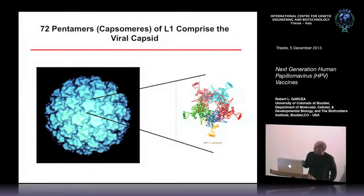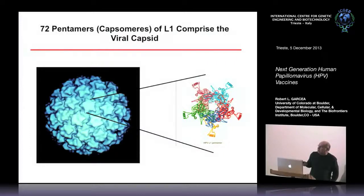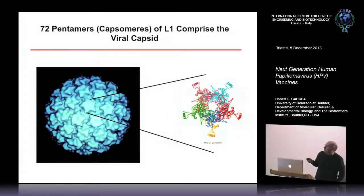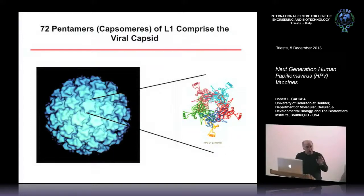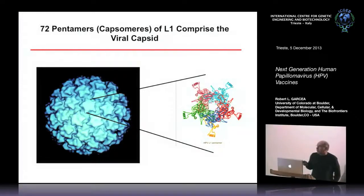Here's where structural biology comes in. This is a cryo-electron micrograph done at the NIH of a bovine papillomavirus virion. You can see the protein subunits on the viral surface — these pentamers, these star-like shapes, are called capsomeres. There are 72 capsomeres in the full virus particle. We know a lot about the structures of these viruses at atomic resolution, so we can make good biological guesses about how to make a vaccine.